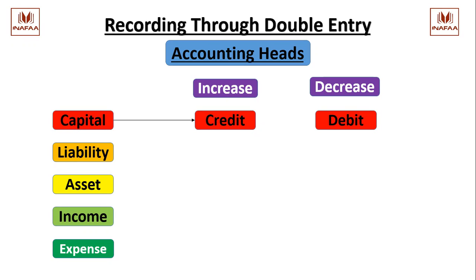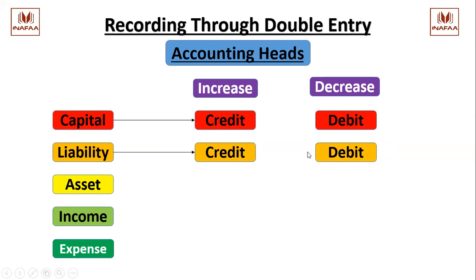The same concept applies to liability. As I told you yesterday, capital and liability are the same - capital is also a liability of the business. Keeping in view the separate entity concept, business is separate from the owner. Whatever the owner invests in the business, the business has to pay that back to the owner, so it is also a liability. Whenever there is an increase in liability, we shall record it as a credit entry, and whenever there is a decrease, as a debit entry.